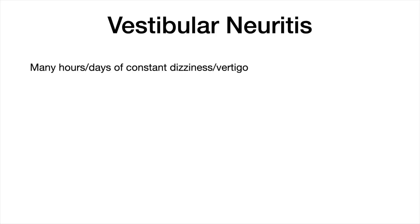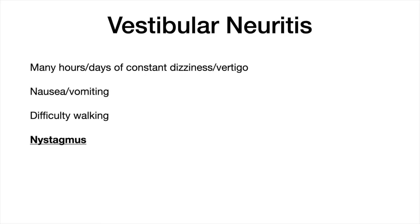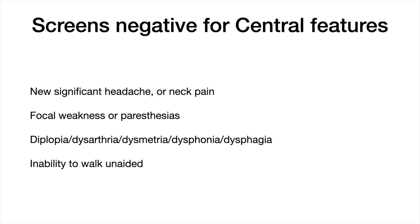In vestibular neuritis, the patient has constant vertigo for many hours or days, nausea, vomiting, difficulty walking, and spontaneous or gaze-evoked nystagmus, at least in the first day or so. They shouldn't have any central features such as new significant headache or neck pain, focal paresthesias or weakness, or any of the dangerous Ds: diplopia, dysarthria, dysmetria, dysphonia, or dysphagia, or inability to walk unaided. So in a patient with nystagmus beating to the left, the affected ear is the right; with nystagmus beating to the right, the affected ear is the left.